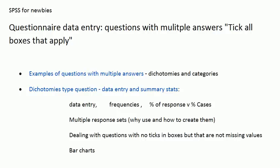Here's what I'm going to do today. I'm going to show you examples of questions with multiple answers so you can recognize whether you're using such questions. There are going to be two types: dichotomies and categories. In this video we're going to focus on dichotomies, because these are the type that ask you to tick all boxes that apply. We'll look at data entry, frequencies, and explain percentage of responses versus percentage of cases. Then we'll cover multiple response sets - why we use them, how we create them - and deal with questions which have no ticks but are not missing values. Finally we'll finish off with creating a bar chart.